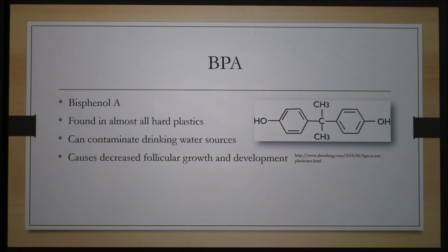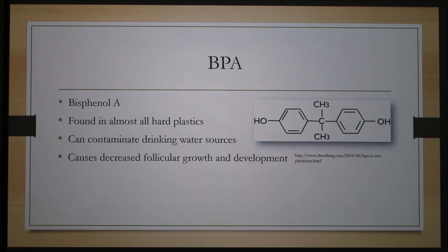An environmental estrogen that can contaminate drinking water sources is BPA, or bisphenol A. It is a compound found in almost all hard plastics that causes decreased ovarian follicular development. BPA can contaminate creeks, rivers, and ponds in cow pastures. Discarded plastics that are exposed to sunlight emit BPA that is then carried into water. This is a big problem for cows that are housed on bigger pastures with natural drinking sources.